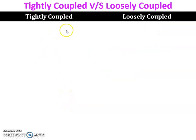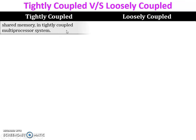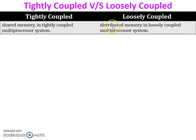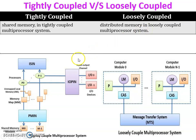The first difference is shared memory. In a tightly coupled multiprocessor system, one memory module is available and shared among all processors. In a loosely coupled multiprocessor system, there is distributed memory — a local memory connected with each individual processor.